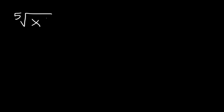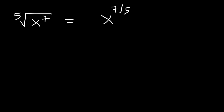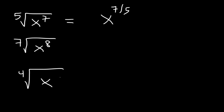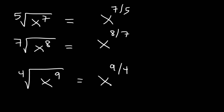Consider this expression in radical notation — how can we convert it to exponential notation? The 5th root of x to the 7 is equivalent to x raised to the 7 over 5: the exponent goes on top, and the index number goes on the bottom. Using that rule, convert these two: the 7th root of x to the 8 becomes x to the 8 over 7, and the 4th root of x to the 9 becomes x to the 9 over 4.